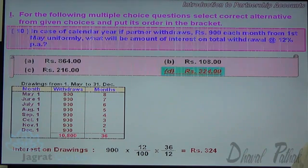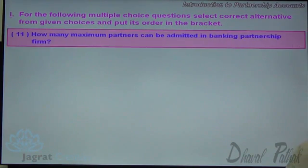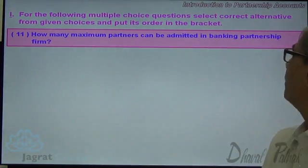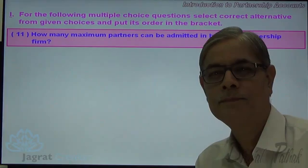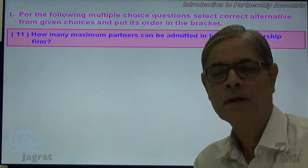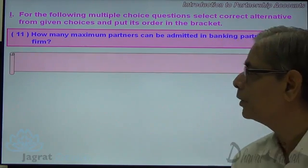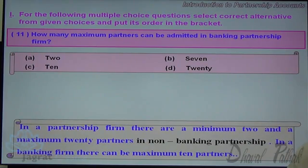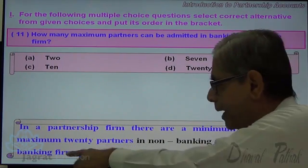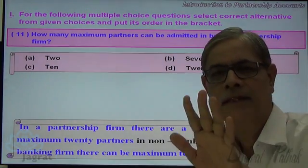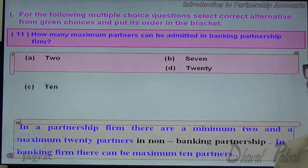Next question. How many maximum partners can be admitted in a banking partnership firm? The maximum number of partners in a banking business done by a partnership is 10. So 10 is the correct answer — option C.